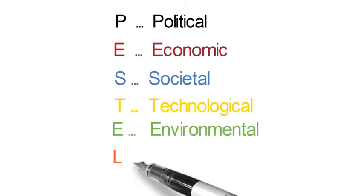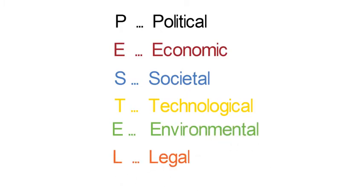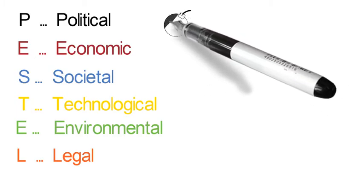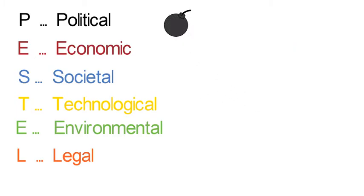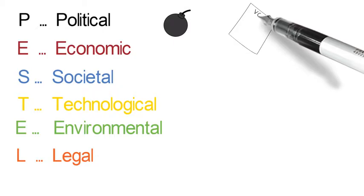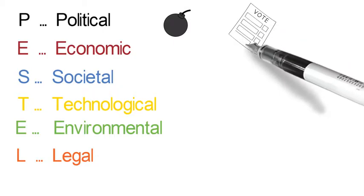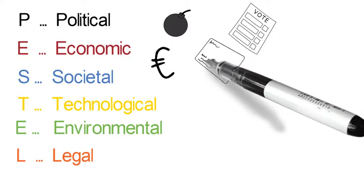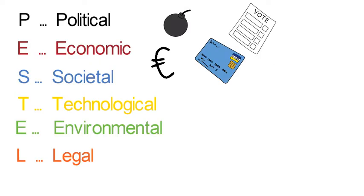Examples of political changes that can affect your business are, for instance, the general level of security and stability, changes in governments and political regimes. Changes in the economic environment involve general economic trends, fluctuations in exchange rates, and the cost and ease of borrowing.